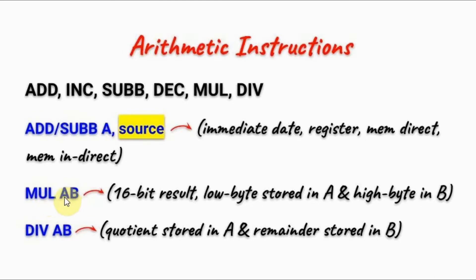This is the instruction for multiplication. Looking at the operand, it must always be AB, meaning that the first number should be in the accumulator and the second number should be in register B. The result is always a 16-bit result, where the low byte will be stored in the accumulator and the high byte will be stored in register B.